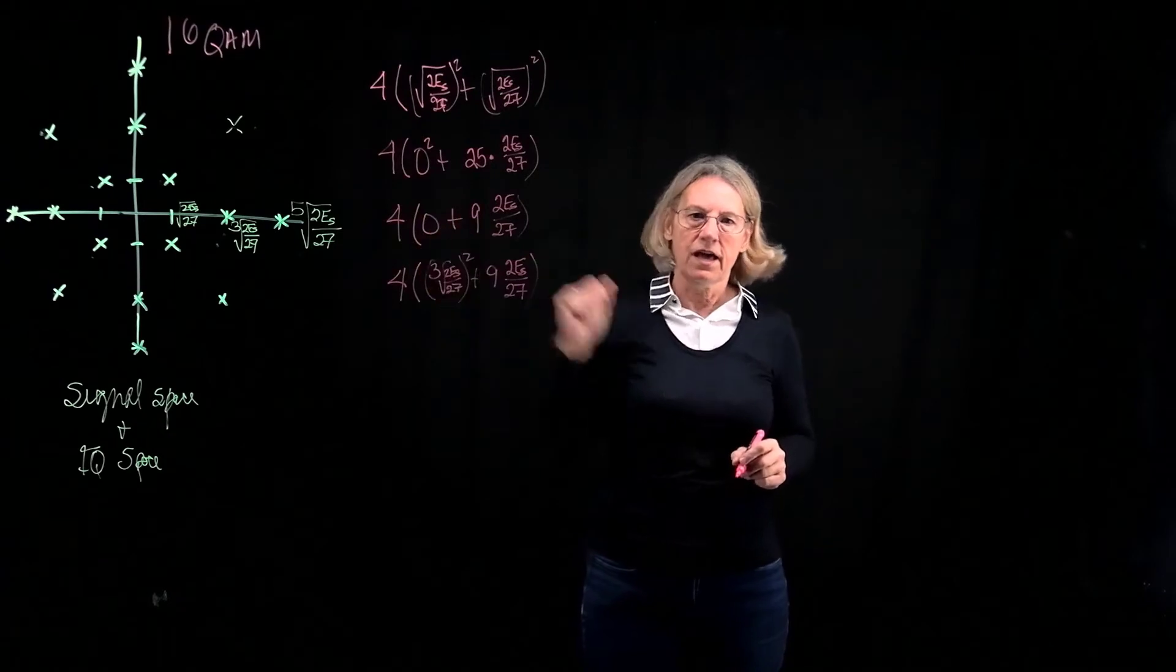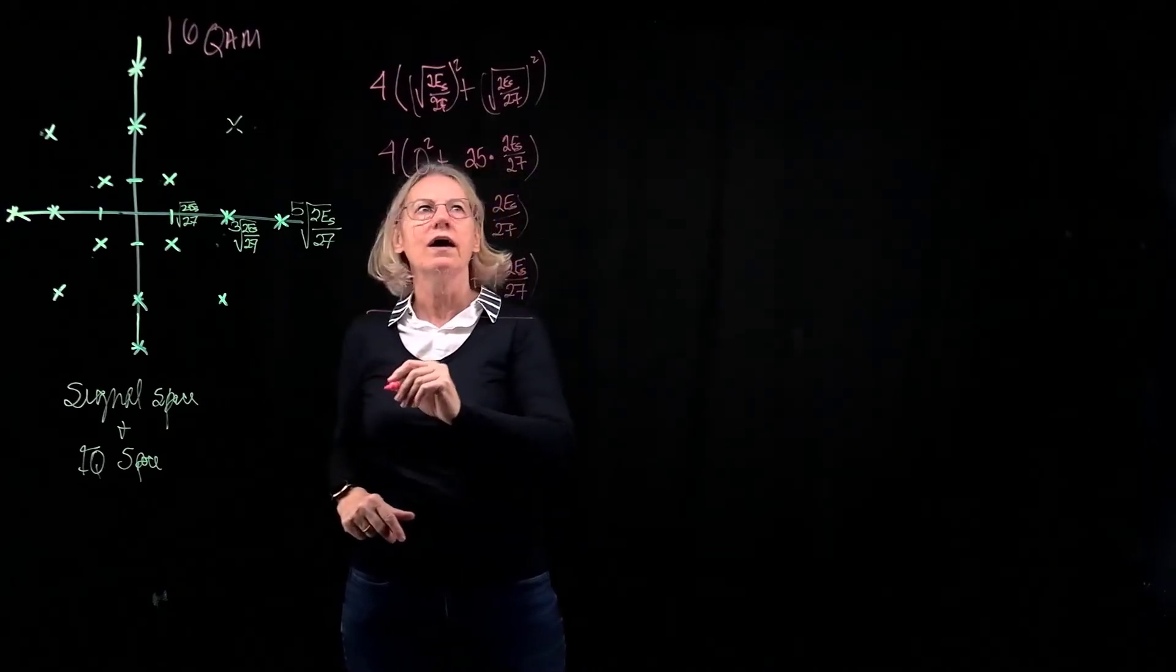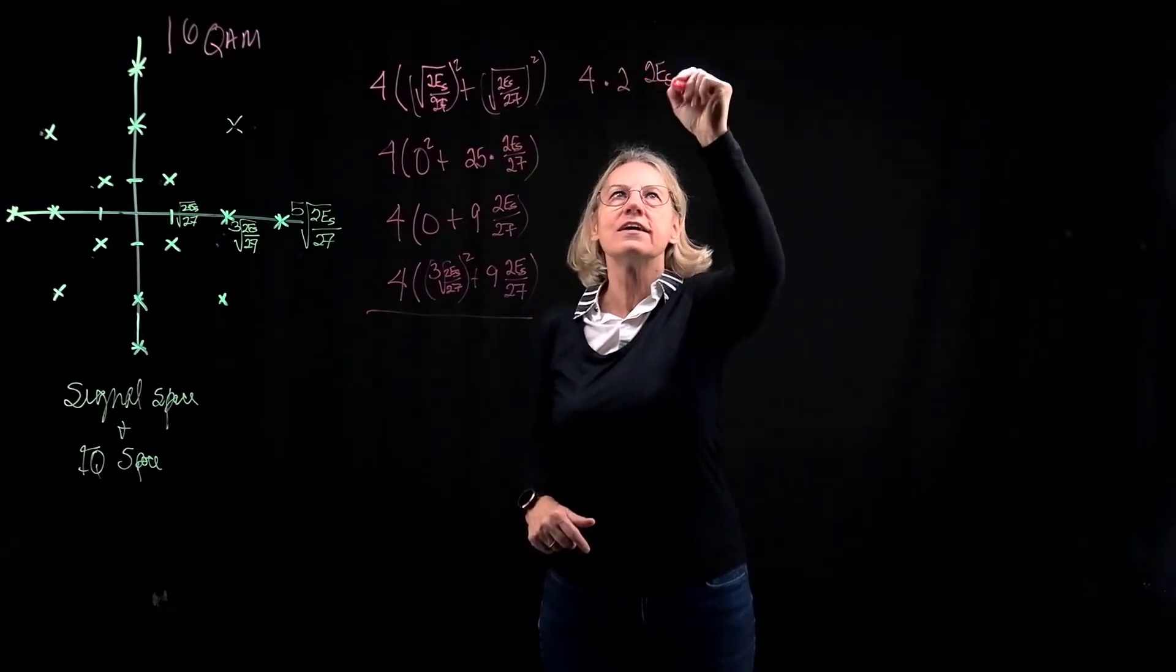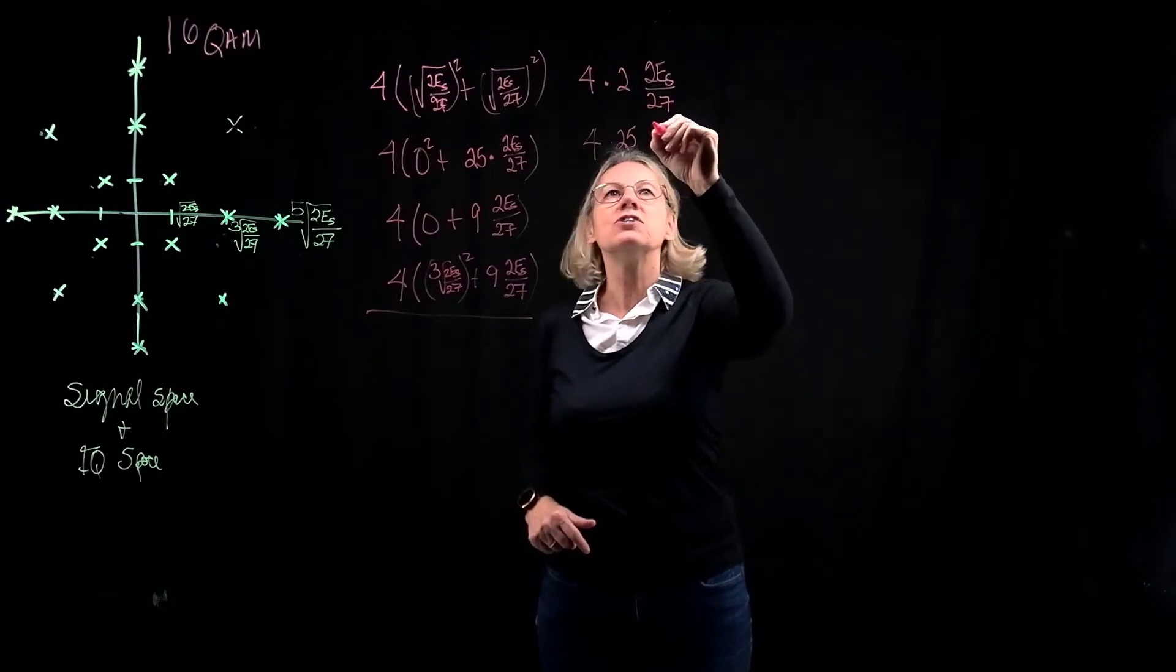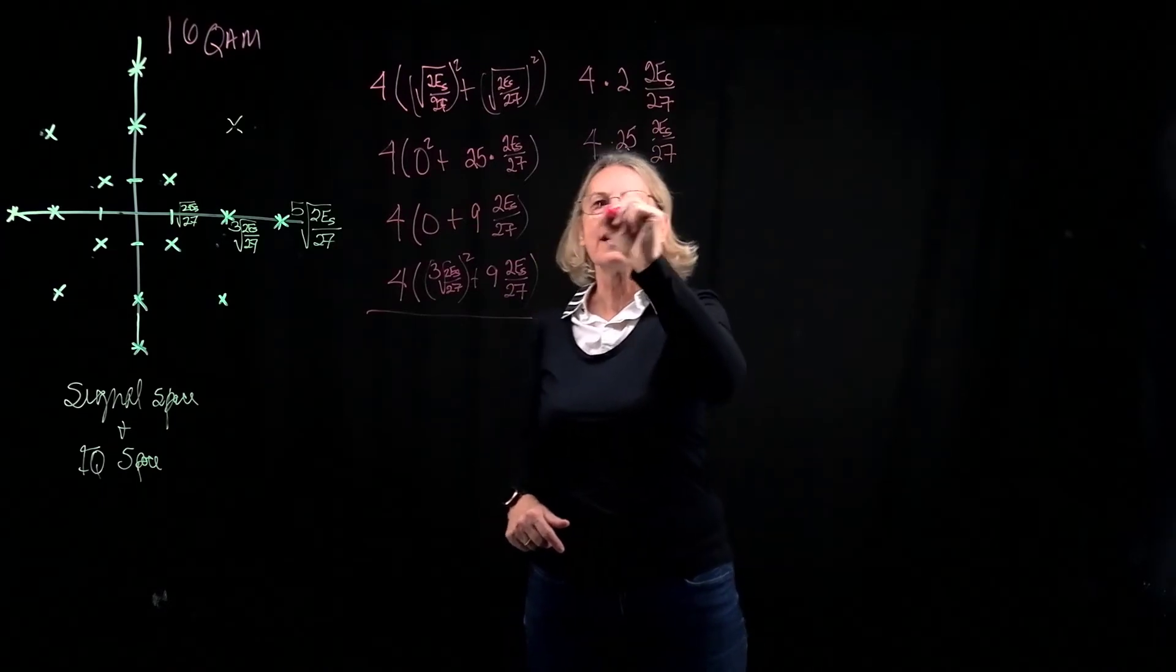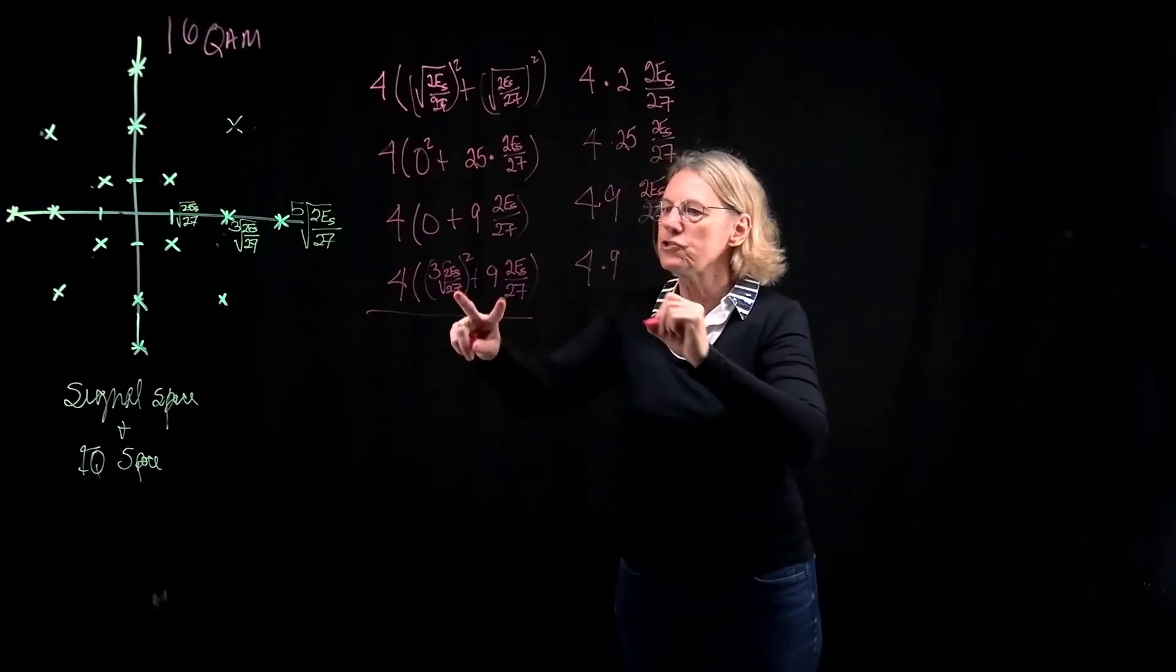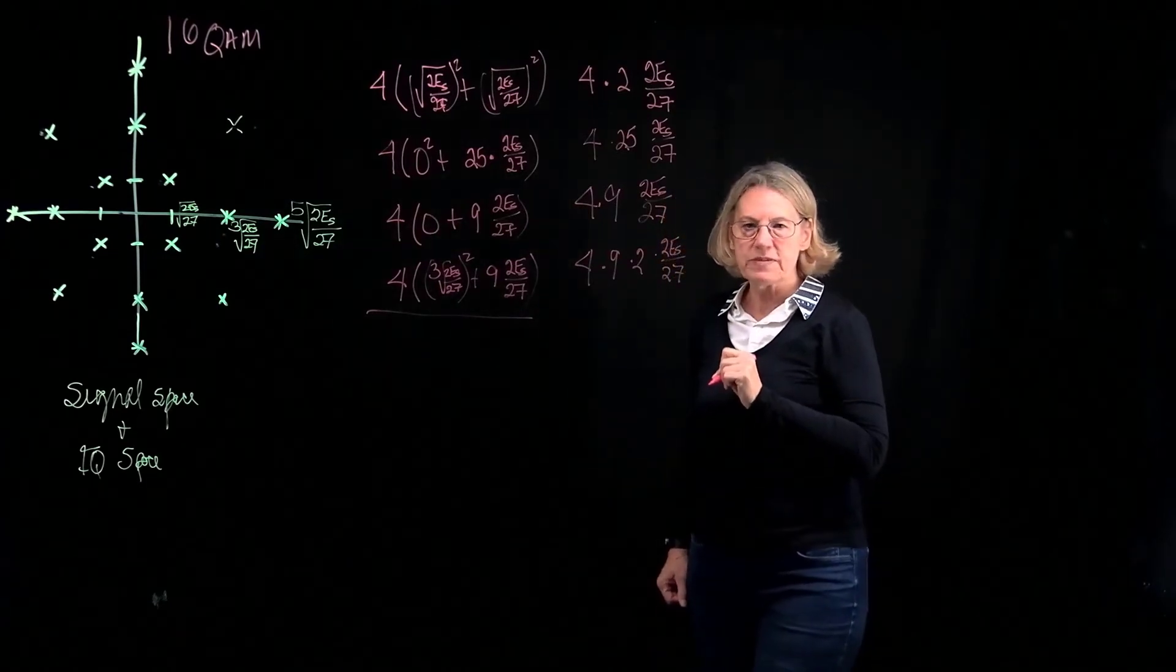So these are all of the contributions, the energy of all the signals. And so I want to sum them up. And so let's make it a little simpler. First of all, it's 4 times 2, because there's two terms, times 2ES over 27. Here there's 4 times 25 times 2ES over 27. Here it's 4 times 9 times 2ES over 27. And finally, there's 4 times 9, and there's two terms, so times 2 times 2ES over 27. Are you all with me so far?